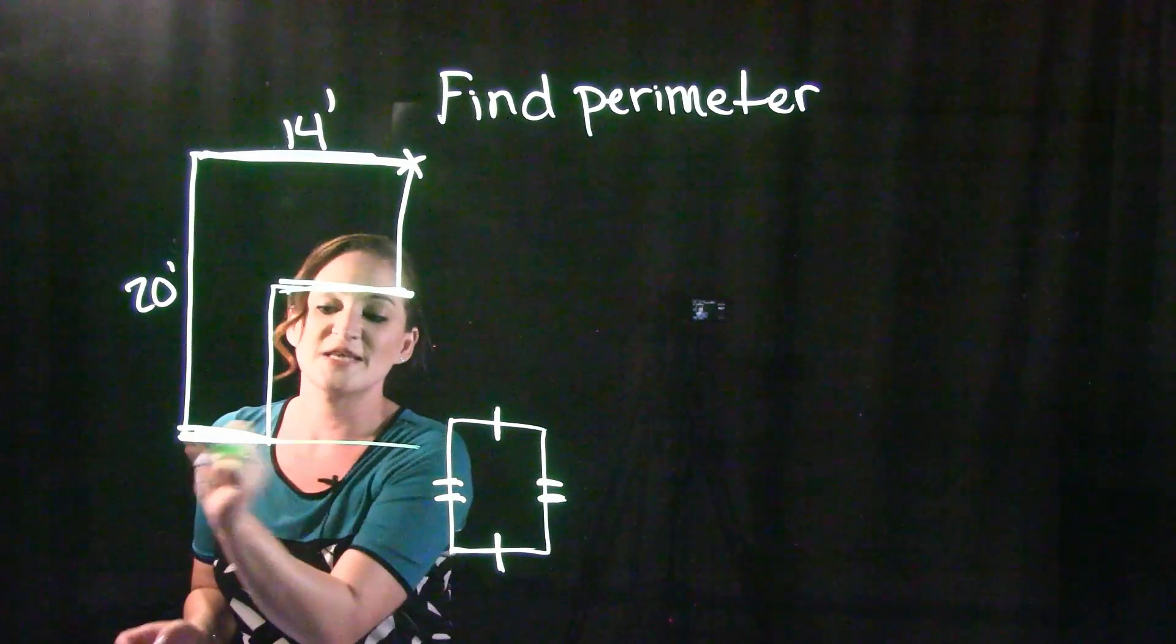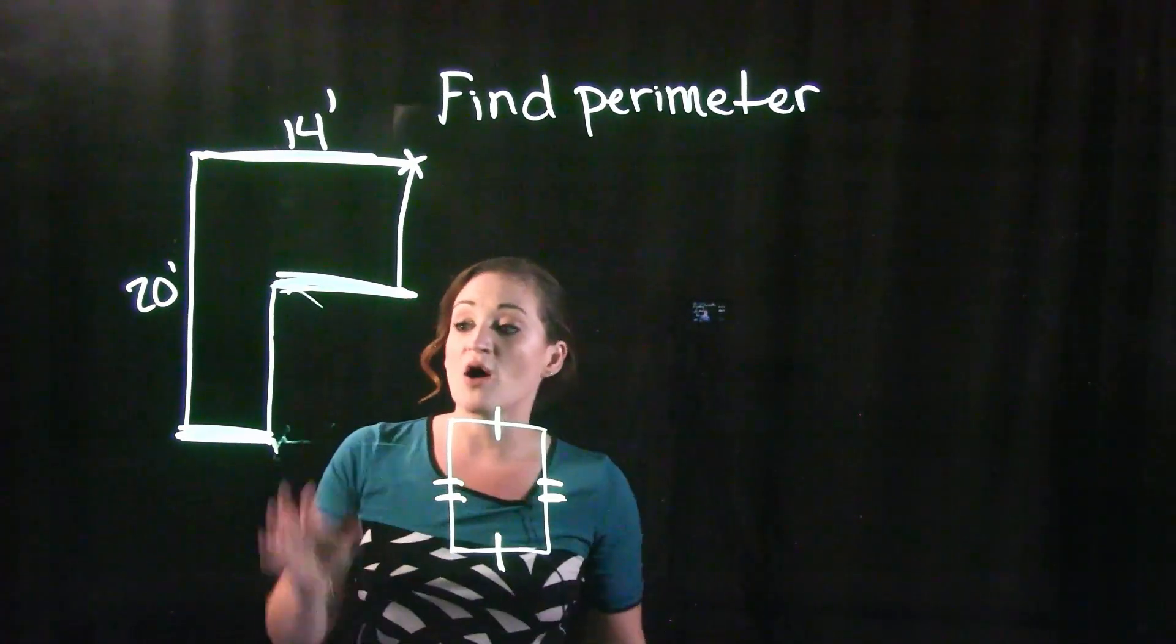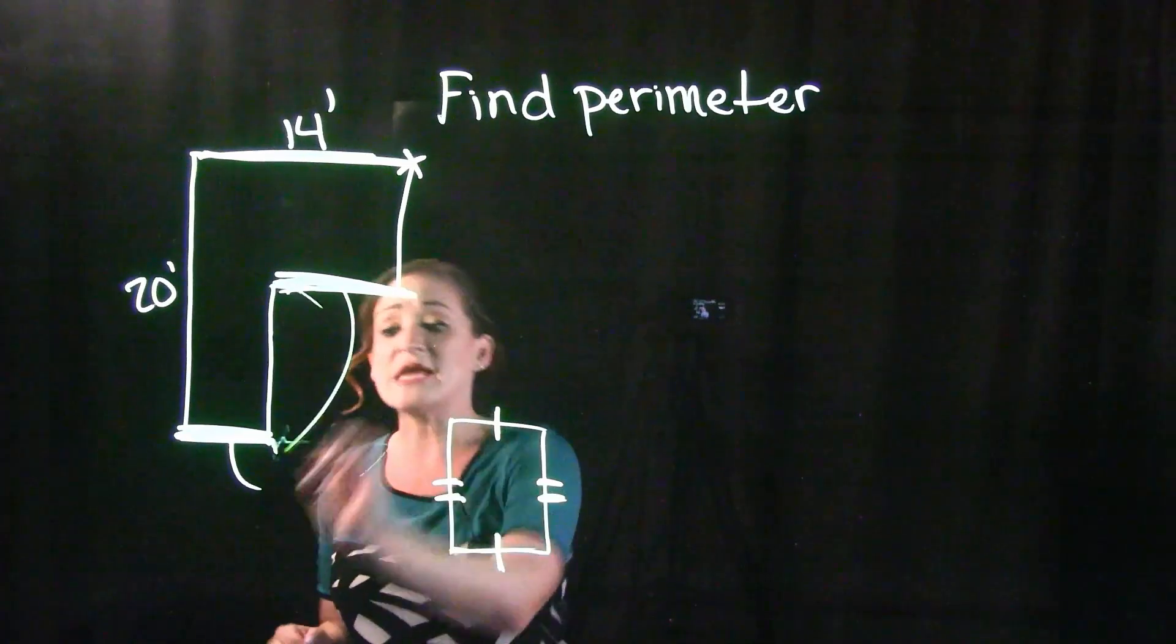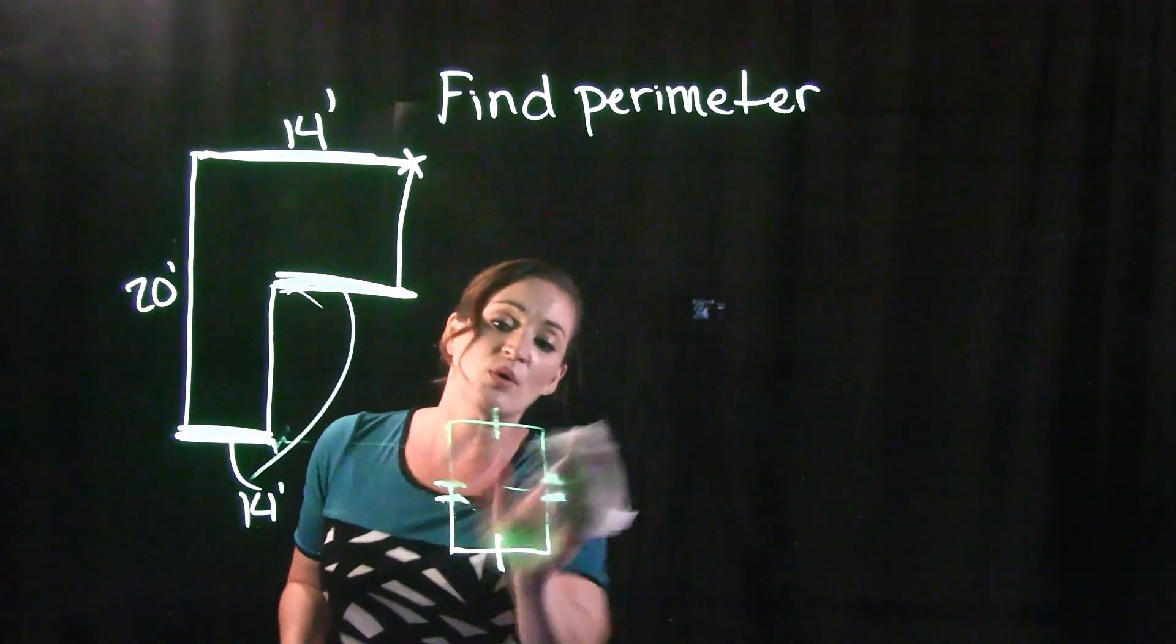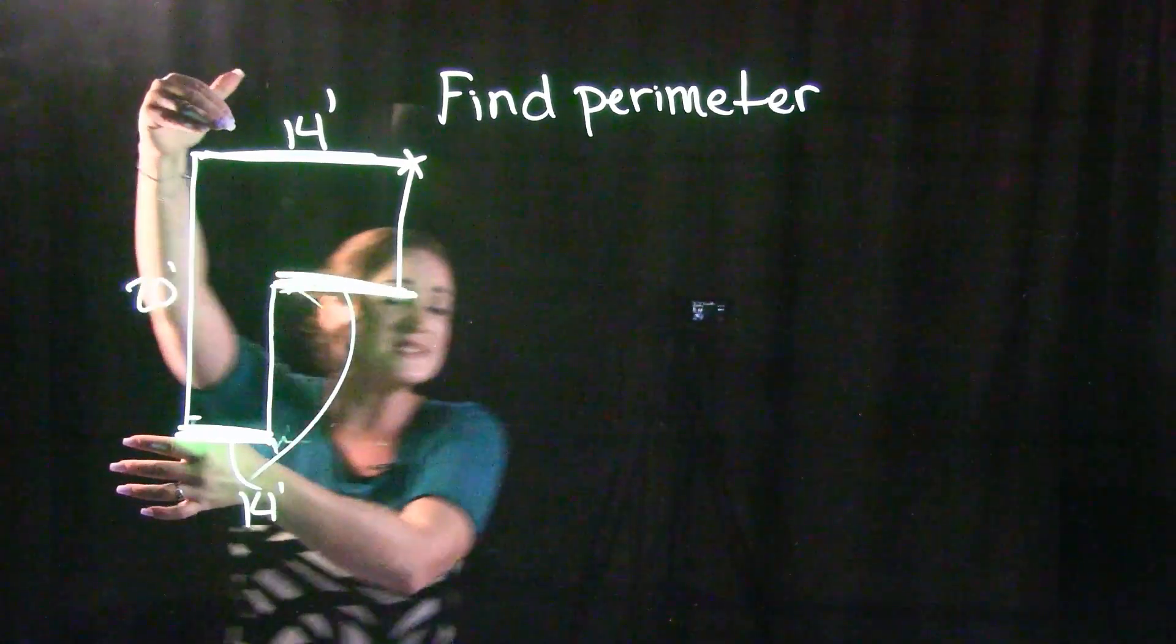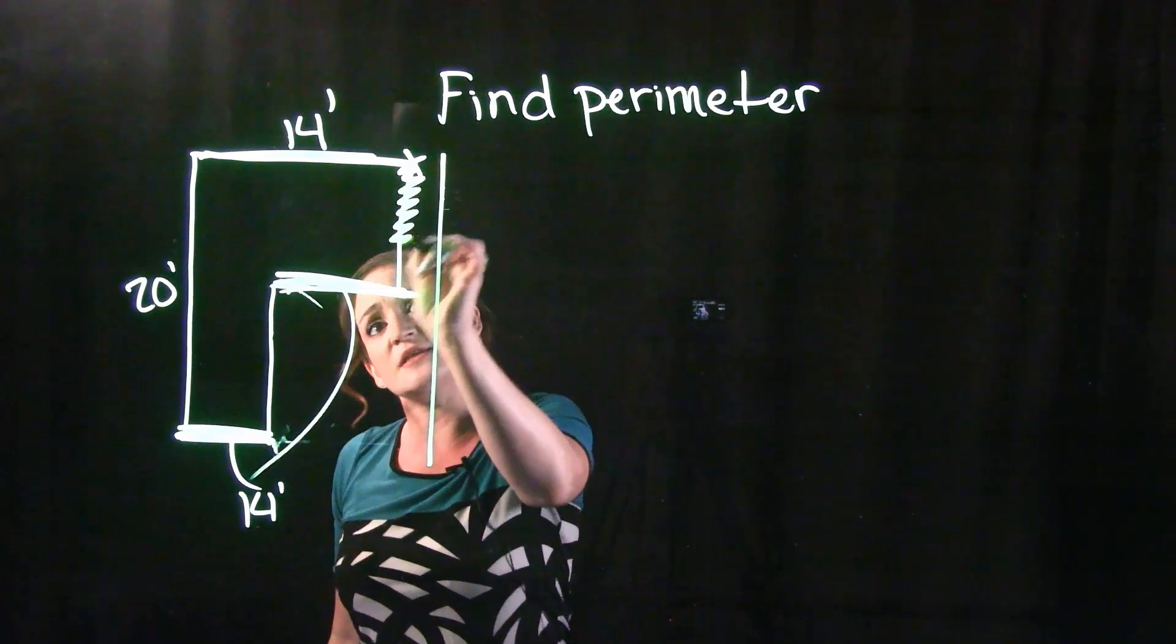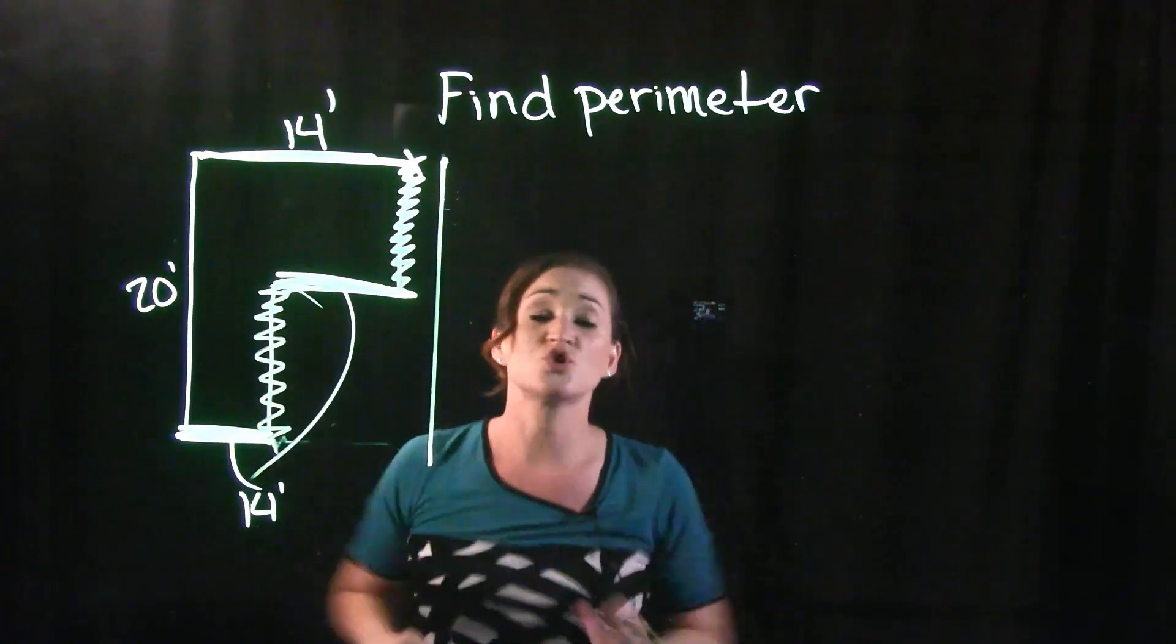Now I don't know how long each one is individually. I have no idea how long this is or how long this one is. But I do know in total both of these lengths are 14 feet by what I know about rectangles. And I can say the same thing for this side over here. If this entire side here is 20 feet, this entire side over here is also 20 feet. That's just going to be broken down with this side here and this one here. These two together will be 20 feet.